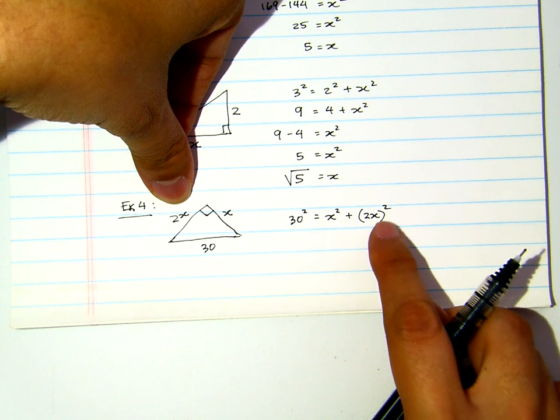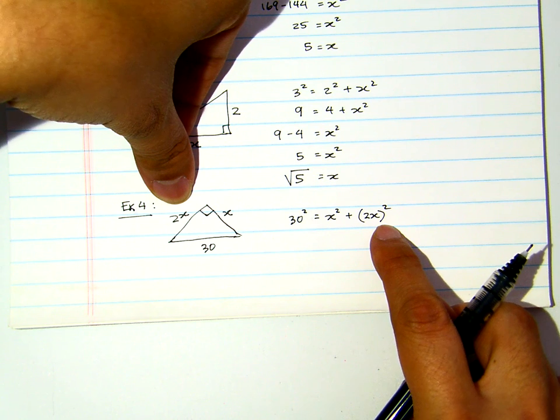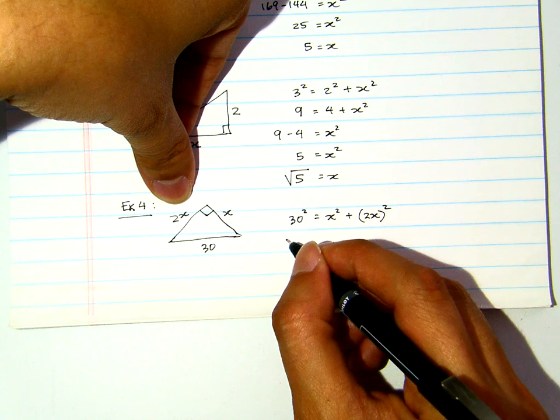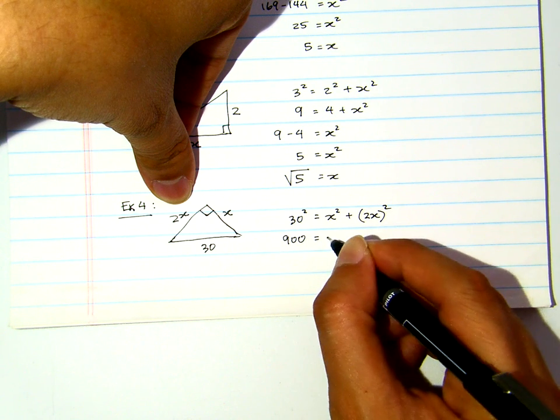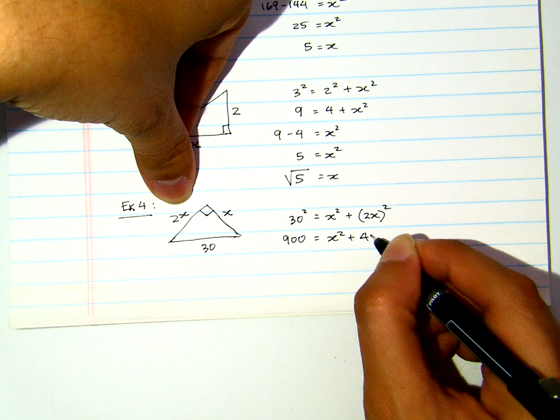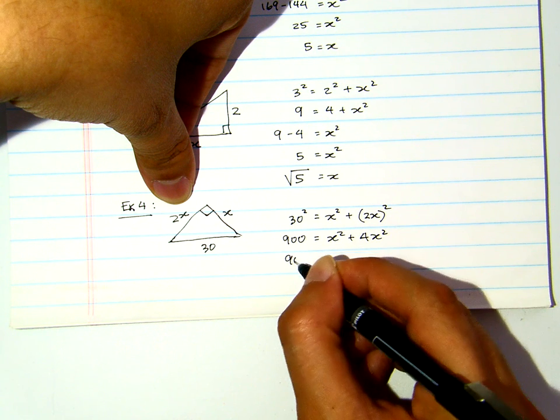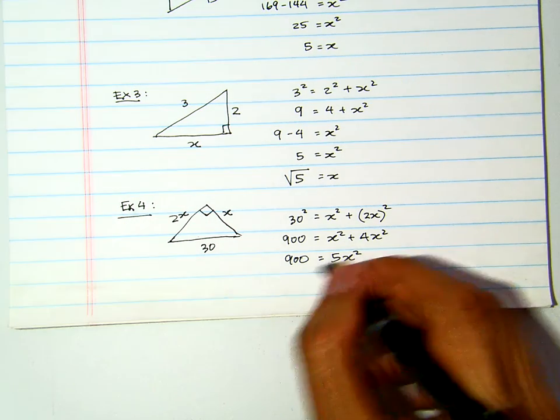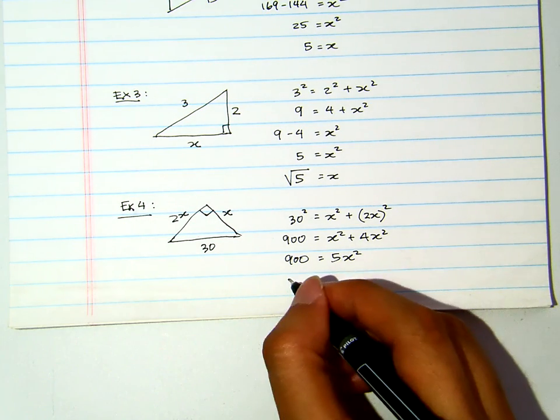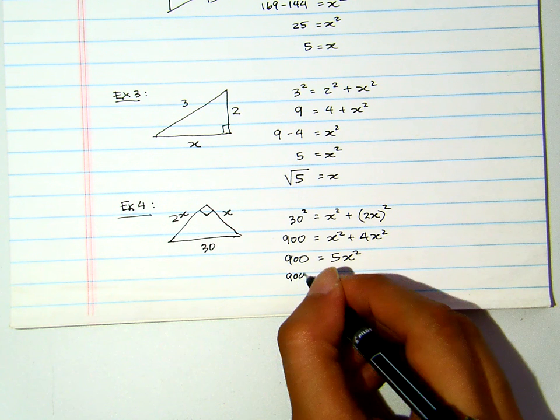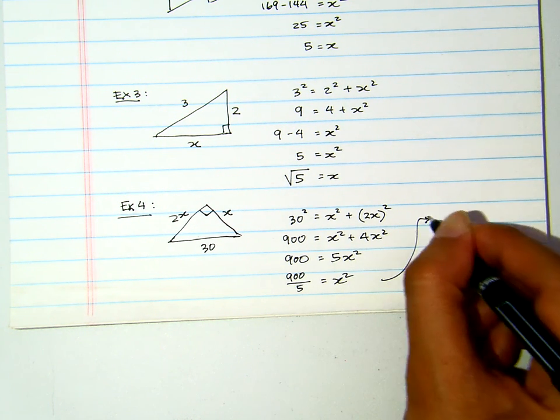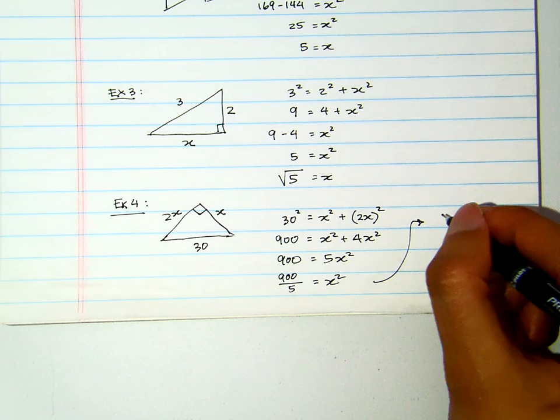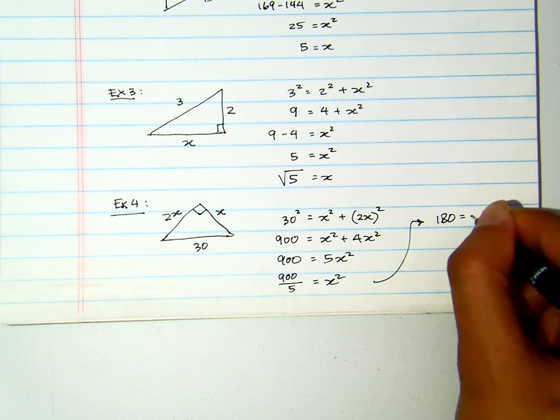Remember, you need to use parenthesis here. Without parenthesis, you are only squaring the X. With parenthesis, you square the 2 as well. This will be 900 equals X squared plus 4X squared. That's 900 equals 5X squared. I will divide by 5. 900 divided by 5 equals X squared. Let me continue on the right-hand side. 900 divided by 5, I believe that's 180 equals X squared.